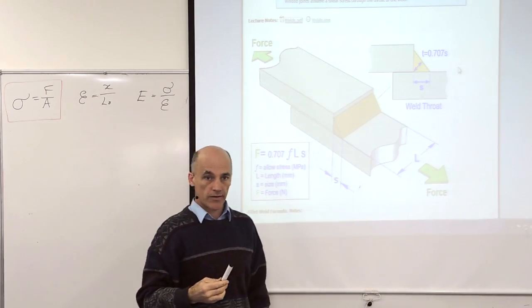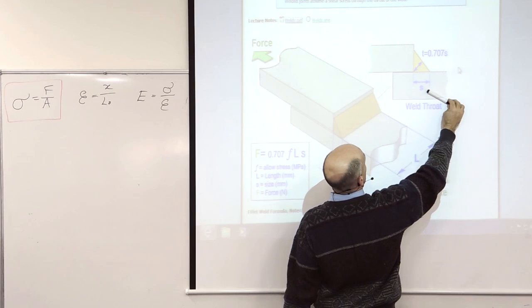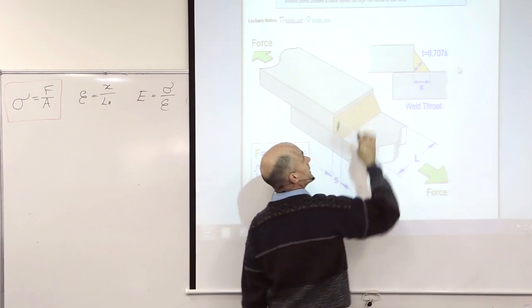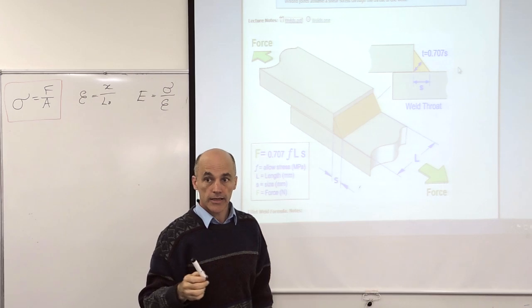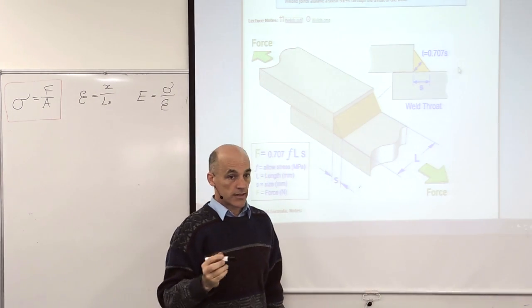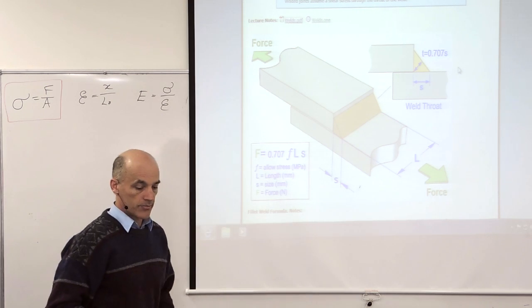Then the force comes along this plate. And then has to transfer across the weld and then into that plate there. And while it's doing that it can only go through the thin part of the weld, which is this throat. What this doesn't take into account is a certain amount of penetration.